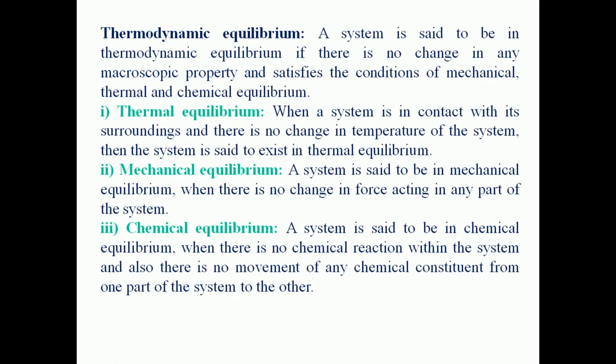Thermodynamic equilibrium: a system is said to be in thermodynamic equilibrium if there is no change in any macroscopic properties, and if it satisfies the conditions of mechanical, thermal, and chemical equilibrium, then the system is said to be in thermodynamic equilibrium. Thermal equilibrium: when a system is in contact with its surroundings and there is no change in temperature of the system, then the system is said to exist in thermal equilibrium.